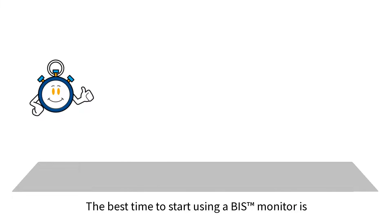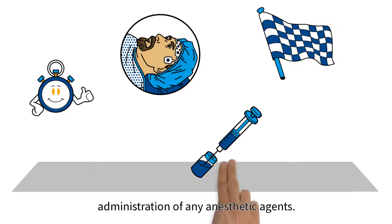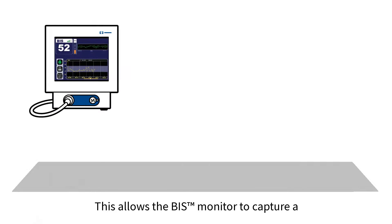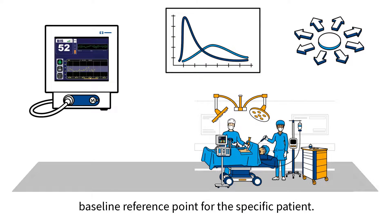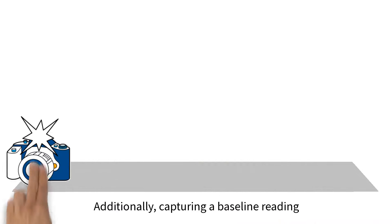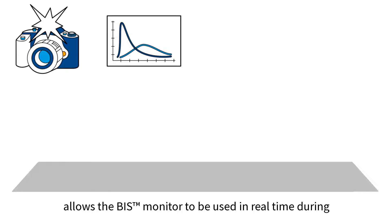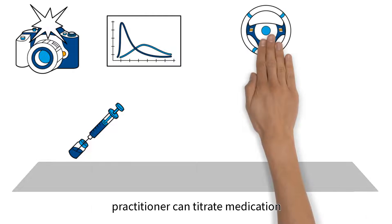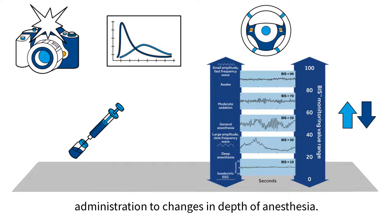The best time to start using a BIS Monitor is the beginning of the case, prior to the administration of any anesthetic agents. This allows the BIS Monitor to capture a baseline reference point for the specific patient. Additionally, capturing a baseline reading allows the BIS Monitor to be used in real-time during the induction of general anesthesia, as the practitioner can titrate medication administration to changes in depth of anesthesia.